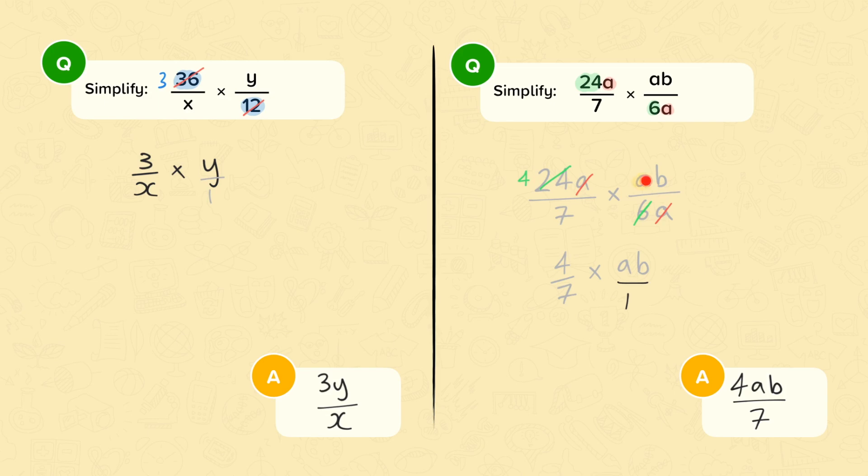Then, I multiplied them together. 4 sevenths times ab. I wrote ab over 1. I'd really recommend doing this to make sure you don't make a silly mistake. Well, then, we simply times the numerators, 4ab, and the denominators, 7. So, you have a final answer of 4ab over 7.